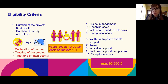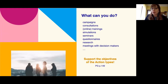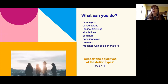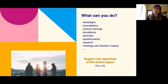Examples of what can be done include campaigns and virtual campaigns, consultations with young people, online and offline trainings, simulation seminars, questionnaires from young people with results passed to decision makers, research, and meetings with decision makers. It is as flexible as you can imagine, but the only limitation is that it should support the objectives of this action type.